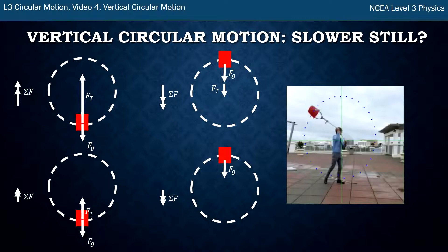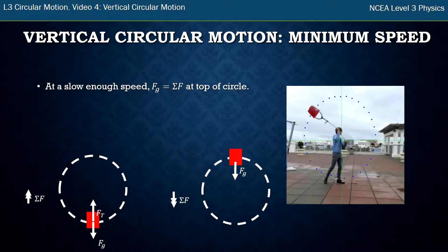So I can't stress that enough. This is the slowest speed we can get to where at the top of the circle the force of gravity provides the total force. There is no tension force.